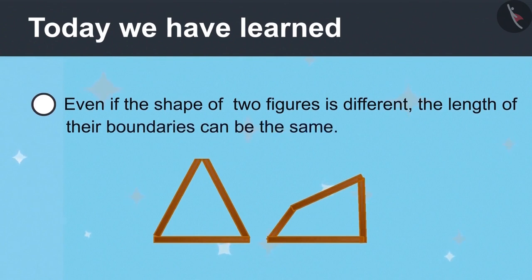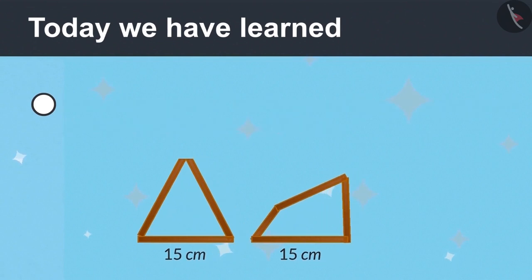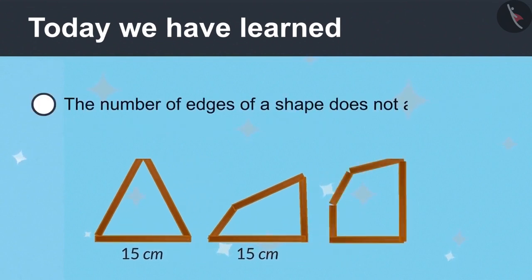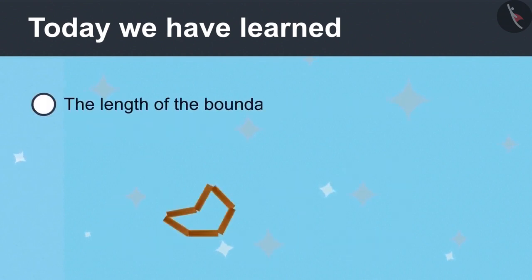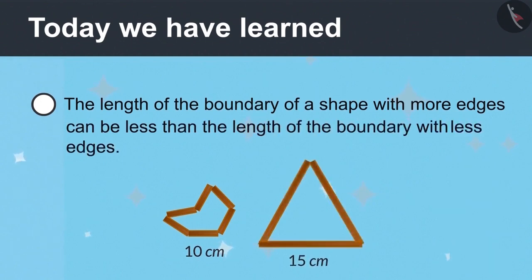Today we have learned that even if the shape of two figures is different, the length of their boundaries can be the same. And the number of edges of a shape does not affect the length of its boundary. The length of the boundary of a shape with more edges can be less than the length of the boundary with less edges.